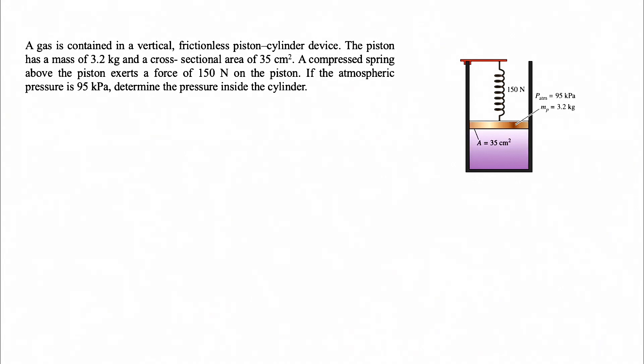We know that the piston has a mass of 3.2 kg and a cross-sectional area of 35 cm². A compressed spring above the piston exerts a force of 150 newtons, and the atmospheric pressure is 95 kPa. We need to determine the pressure inside the cylinder.